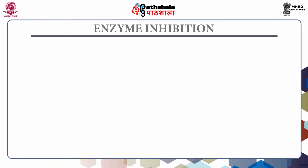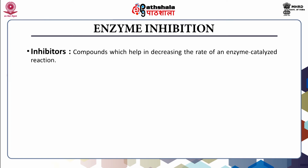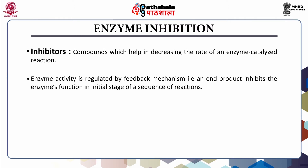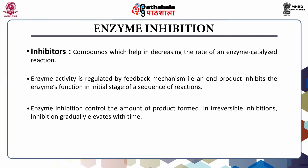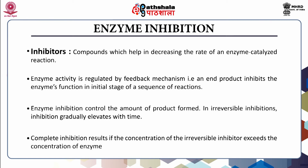Let us see what is enzyme inhibition. Inhibitors are compounds which help in decreasing the rate of an enzyme-catalyzed reaction. Enzyme activity is regulated by a feedback mechanism where an end product inhibits the enzyme's function. In the initial stage of a sequence of reactions, enzyme inhibition controls the amount of product formed. In irreversible inhibition, inhibition gradually elevates with time, and complete inhibition results if the concentration of the irreversible inhibitor exceeds the concentration of the enzyme.